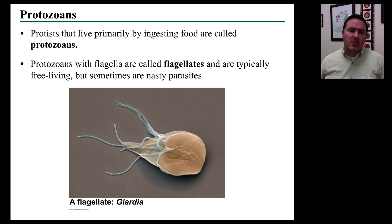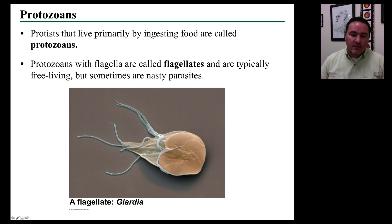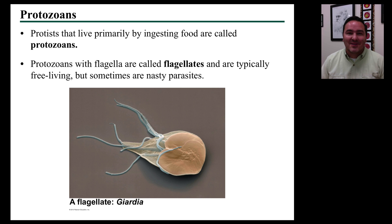Some of the protists that we have on this planet are called protozoans, and they are mainly the protists that live by ingesting food. Some of these are grouped into a large group of protists named the flagellates — organisms that have flagella that propel them through the medium in which they live. This is an example of the flagellate Giardia, which is something you've heard of if you've ever heard of drinking dirty water in the mountains.